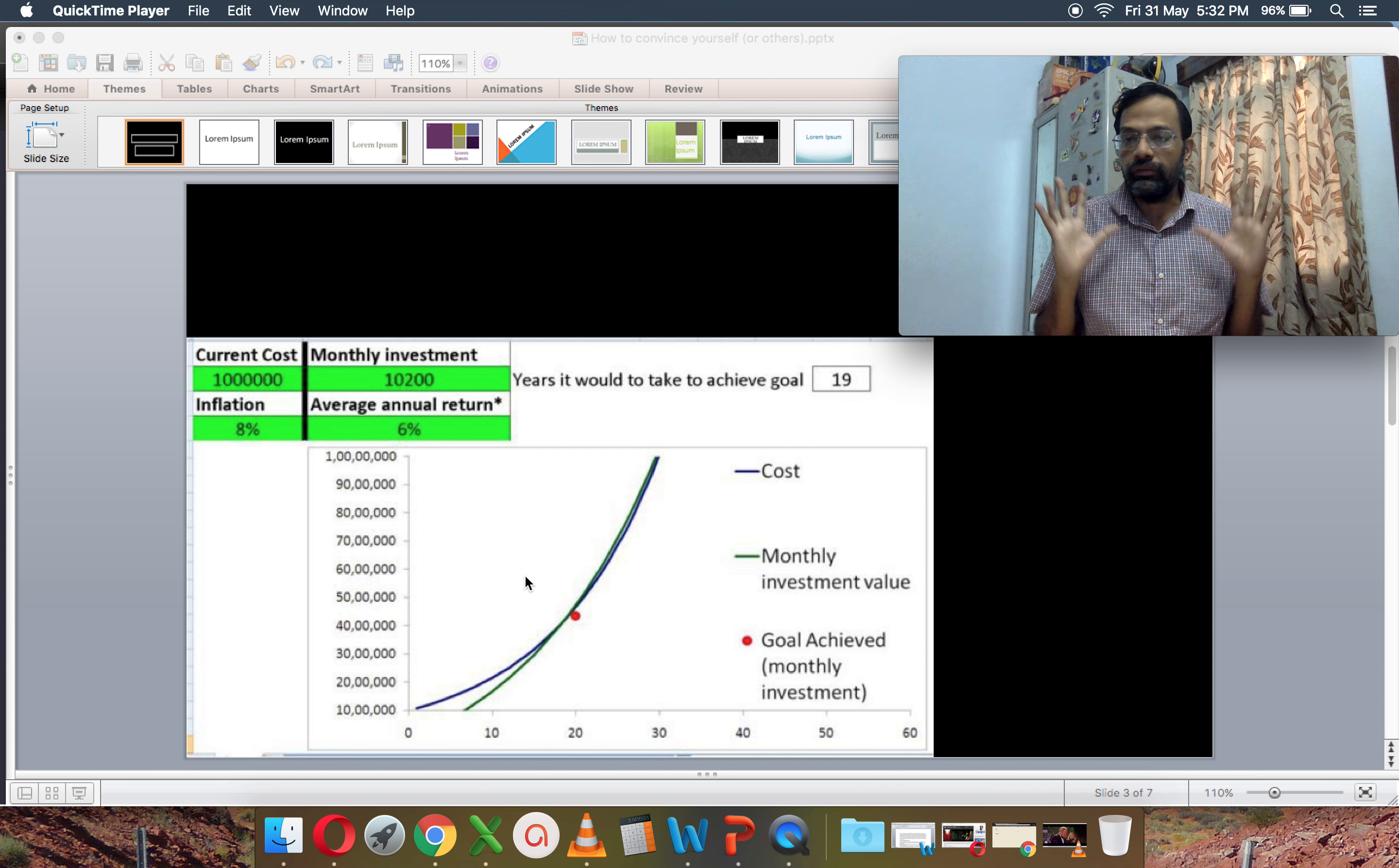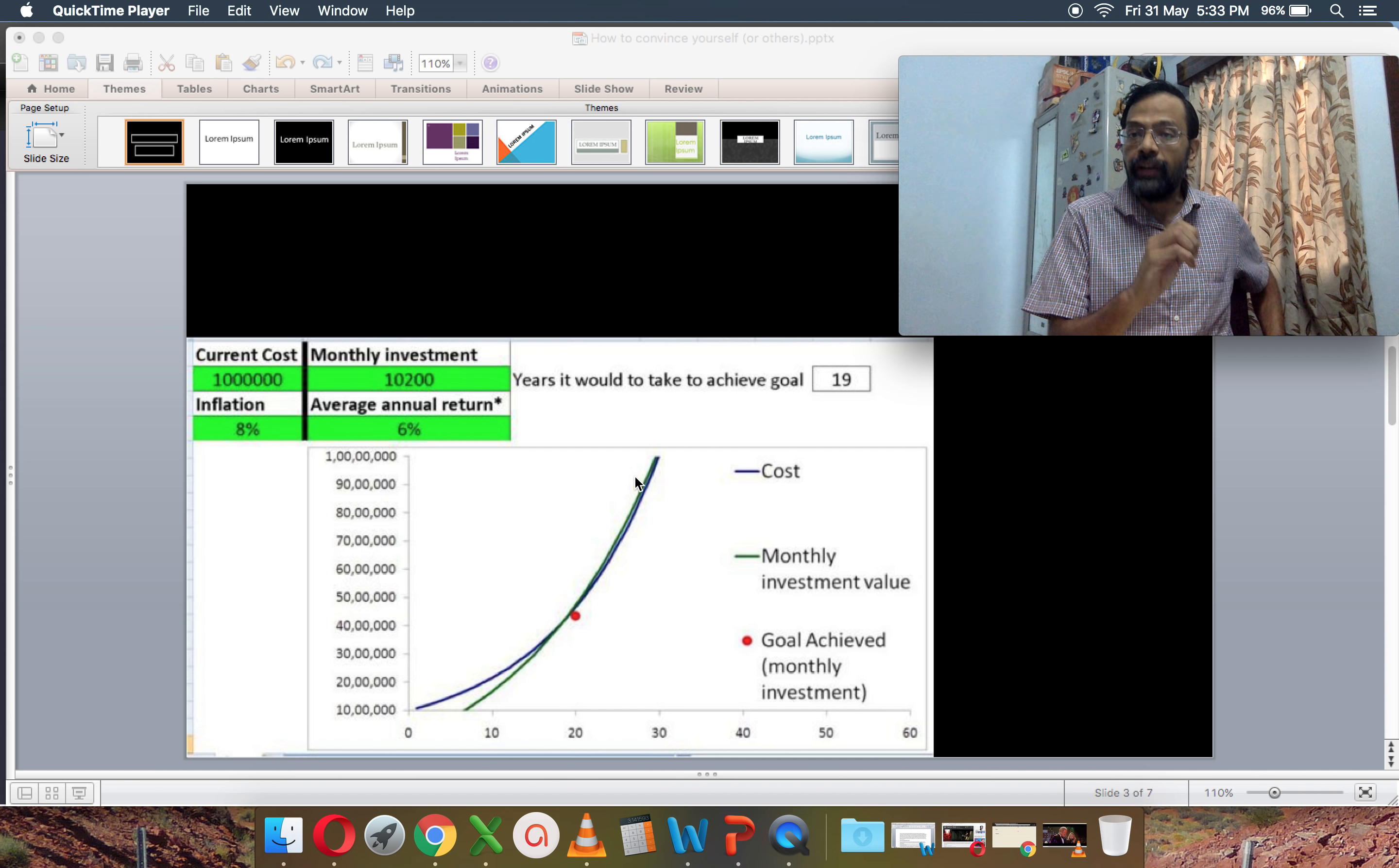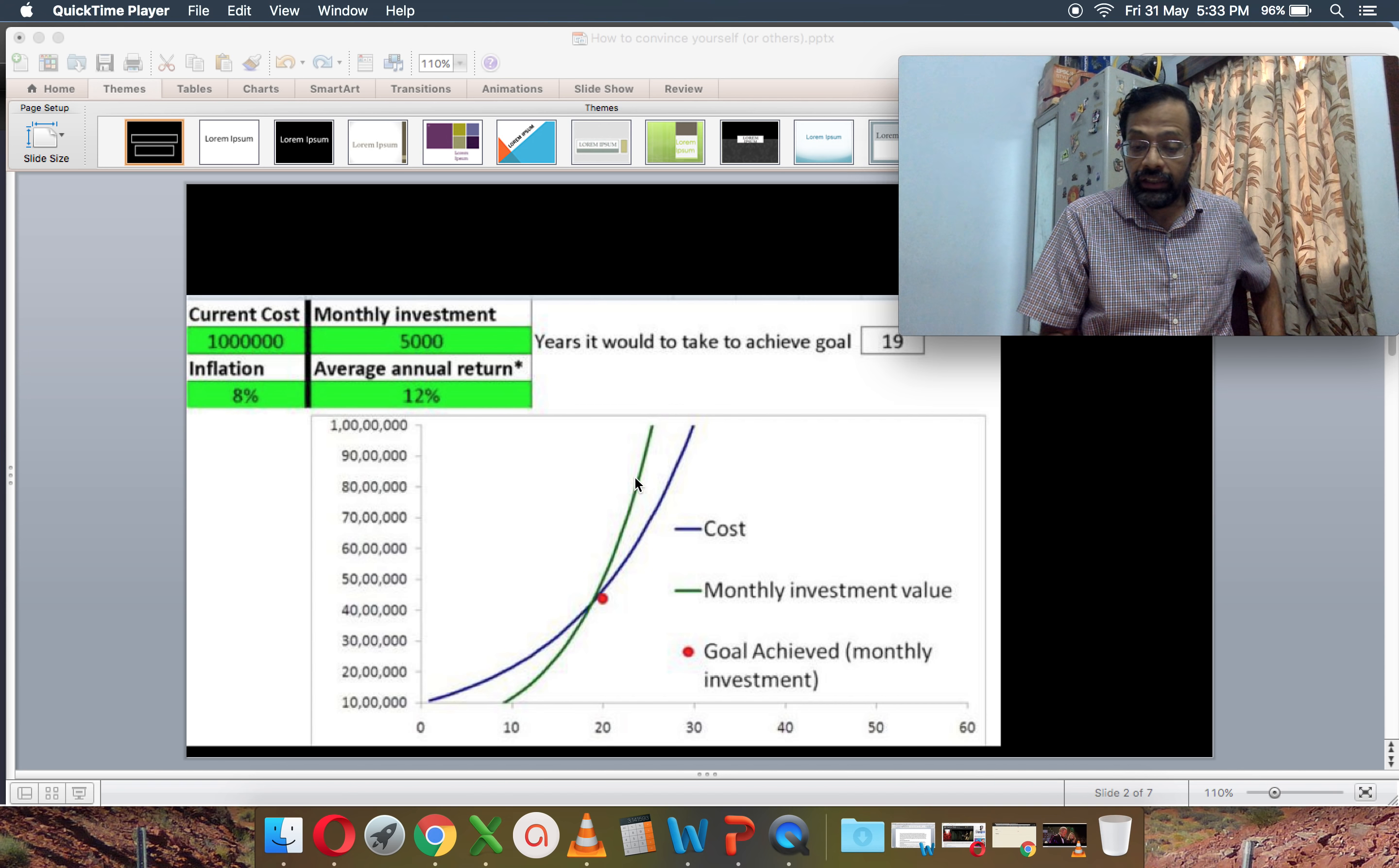Now, if this person must achieve that goal, please recognize the current cost is the same. The inflation is the same. So the blue line which is the cost has increased in time the same way as in the previous example where the return was 12%. But the return has come down from 12% to 6% now. So what has happened? If the person should achieve that goal after 19 years, then they must invest 10,200, more than double of that 5,000 which was invested in the previous example.